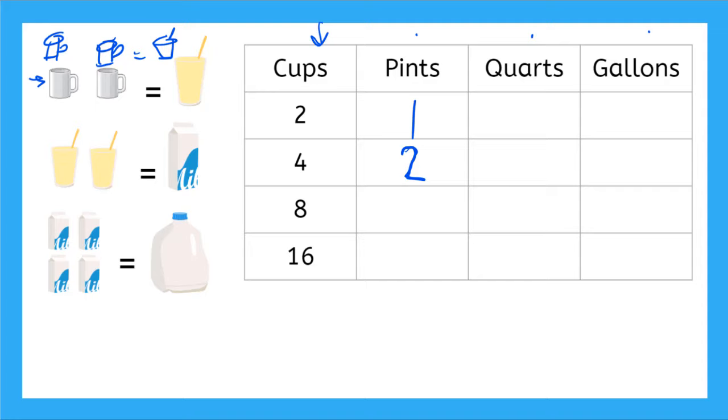Now do you see a pattern between the number of cups and the number of pints between these two here? Yeah, it looks like the number of cups divided by two is equal to the number of pints. If we have two divided by two, we get one. If we have four divided by two, we get two. Now let's say we had eight cups. Well, if I know the number of cups divided by two is going to equal the number of pints, eight divided by two is equal to four. And now if I had 16 cups, if I divide 16 by two, I get my number of pints. 16 divided by two is eight. So we know that there is a factor of two that is different between cups and pints.